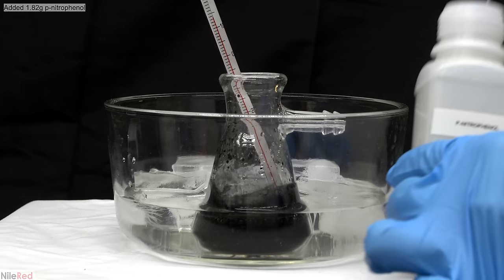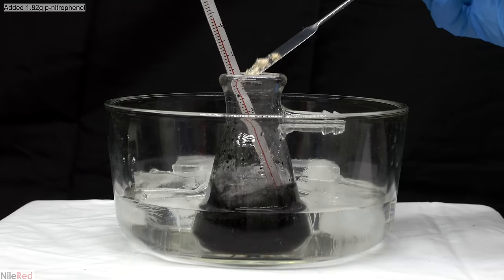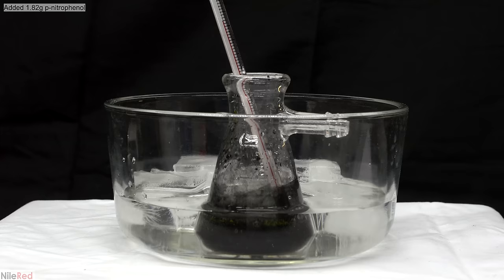Once the temperature is around the 13 Celsius mark I start to add the p-nitrophenol. The addition will generate heat and we want to keep the temperature below around 17°C so it's important to add it in small portions.